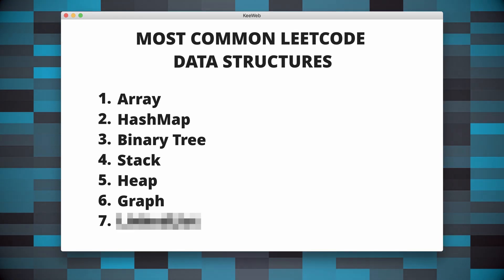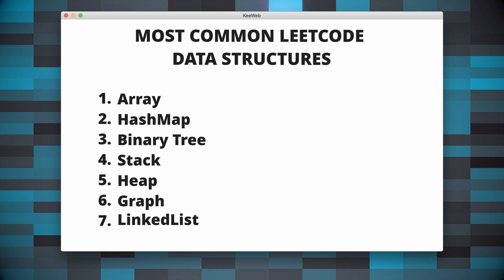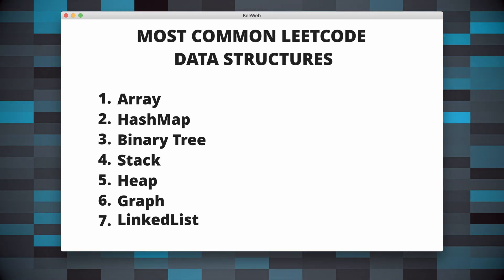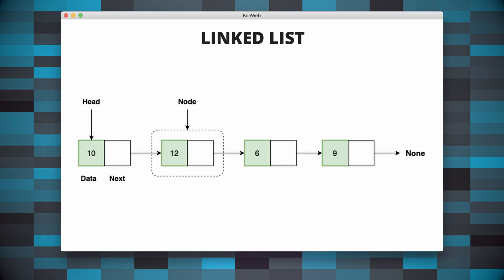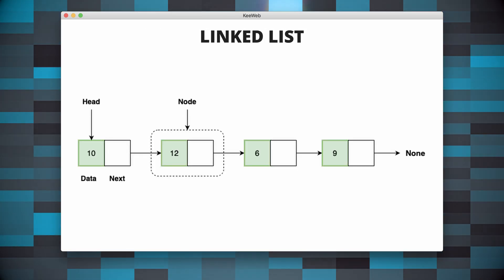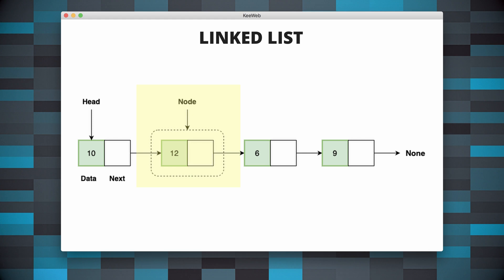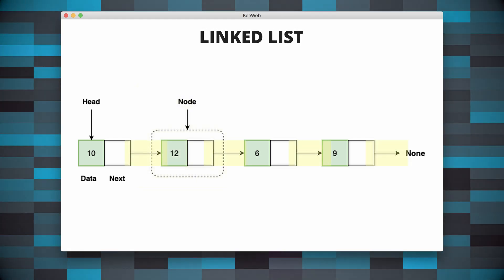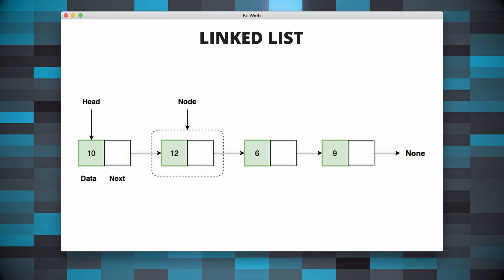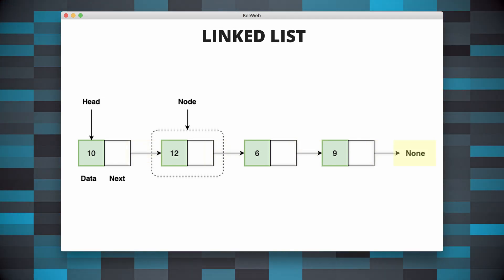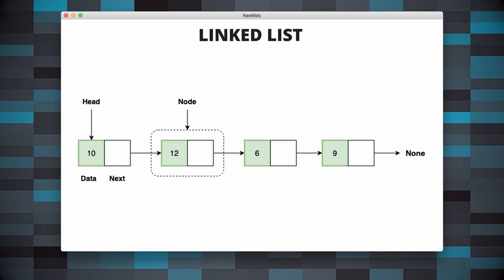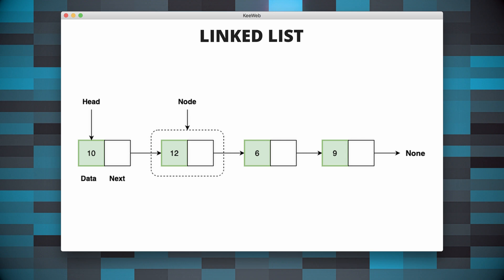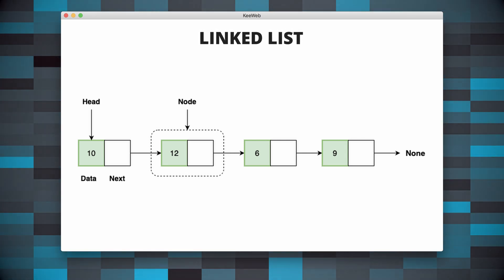I have been asked questions regarding linked lists many times during interviews, so these are quite popular with interviewers. A linked list is a linear data structure in which elements are stored in nodes, and each node points to the next node in the sequence. The last node typically points to None, indicating the end of the list. Linked lists offer dynamic memory allocation, efficient insertions and deletions, and do not have a fixed size.